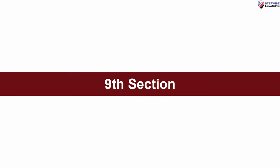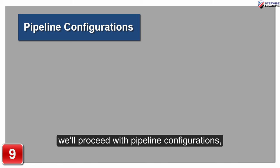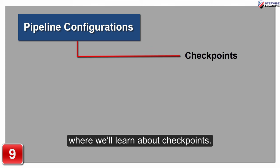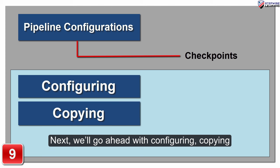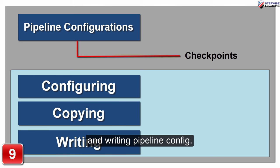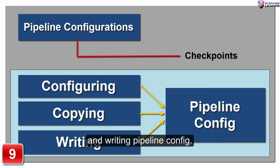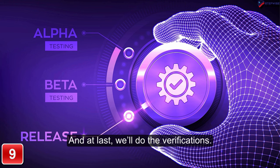In the ninth section, we will proceed with pipeline configurations where we will learn about checkpoints. Next, we will go ahead with configuring, copying and writing pipeline config. And at last, we will do the verifications.